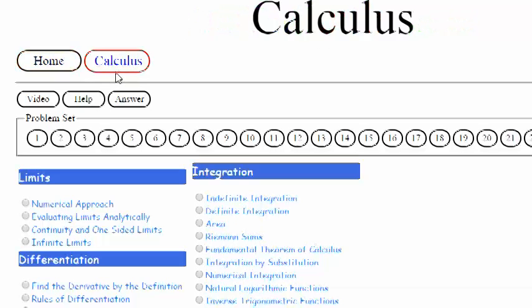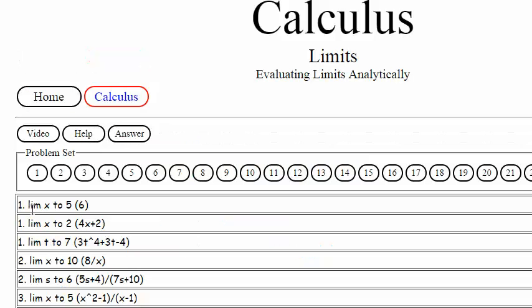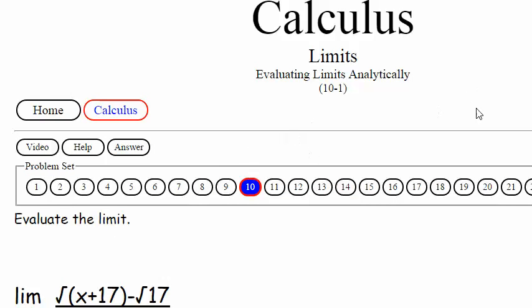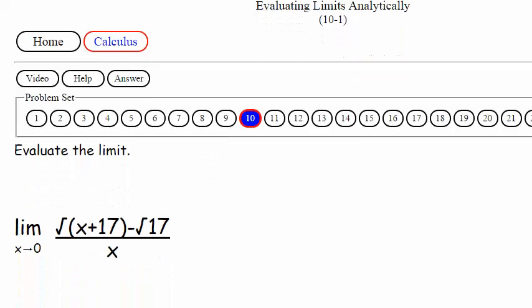Let's click on the Calculus button. We're under Evaluating Limits Analytically, and I believe that's the button I need to be pushing. We've got to evaluate the limit as x approaches 0 of the square root of x plus 17 minus square root of 17 over x. Let's bring up the whiteboard.